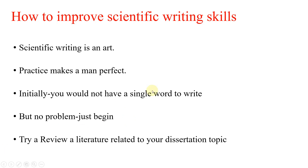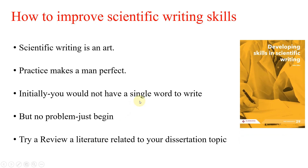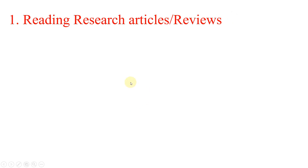Whatever you want to write, whatever you are focusing on, just start writing. It might need improvement but it must begin. For example, if you want to write about your dissertation topic, you can try to write a review of literature related to that. Let's now move to the five ways we can apply in daily life to improve our scientific writing skills.